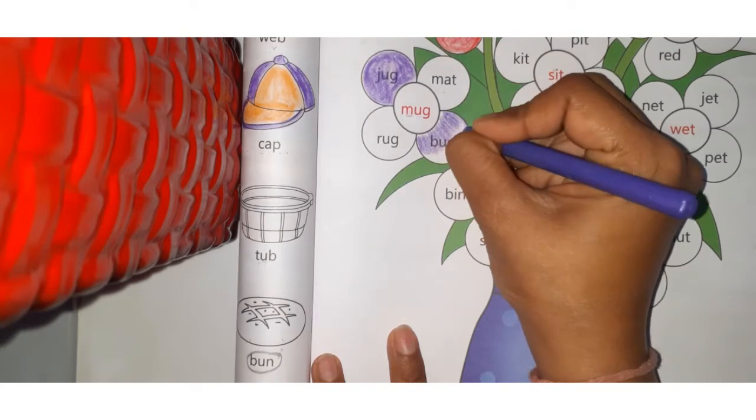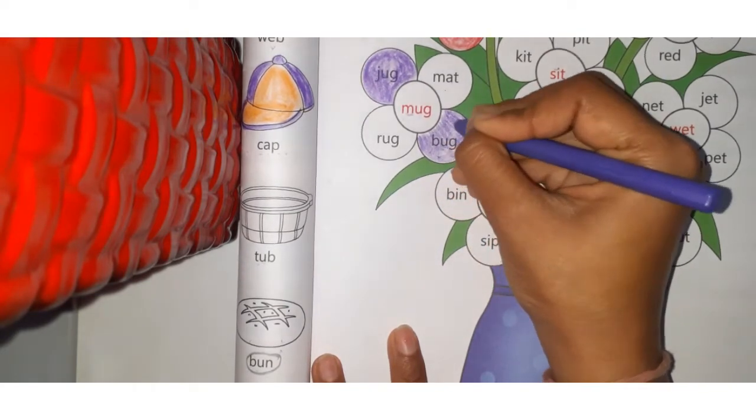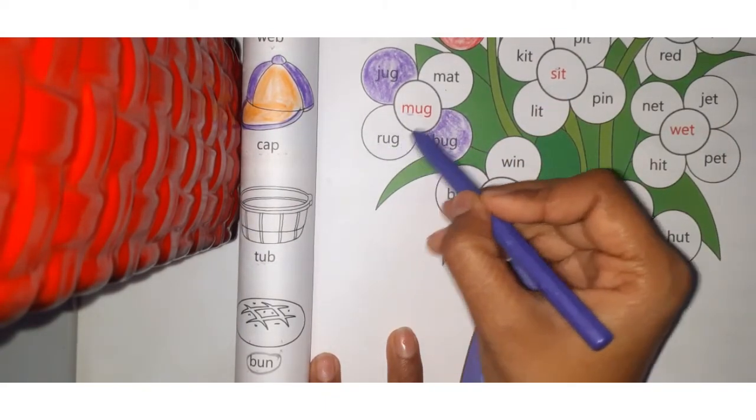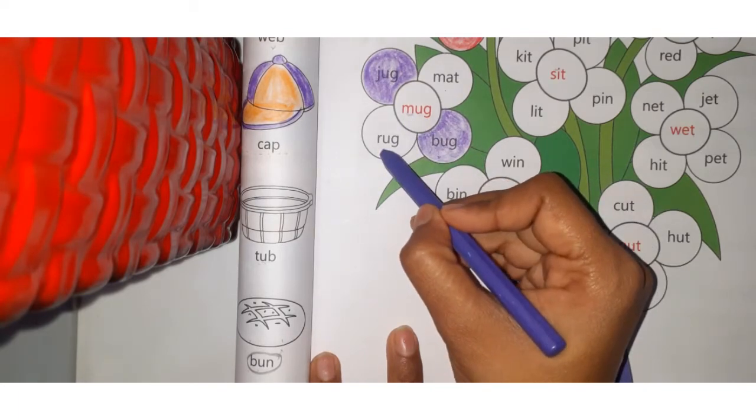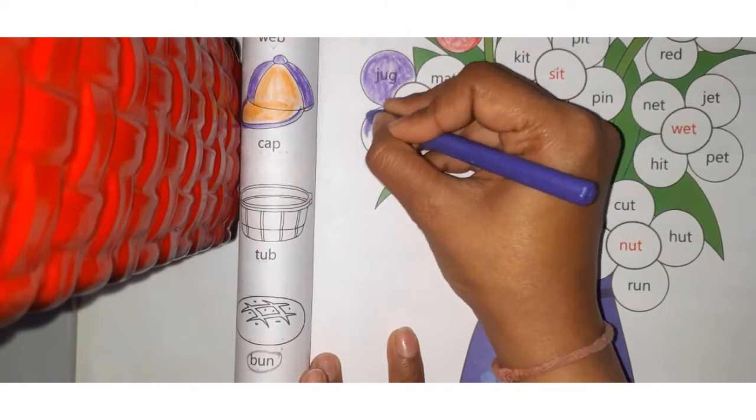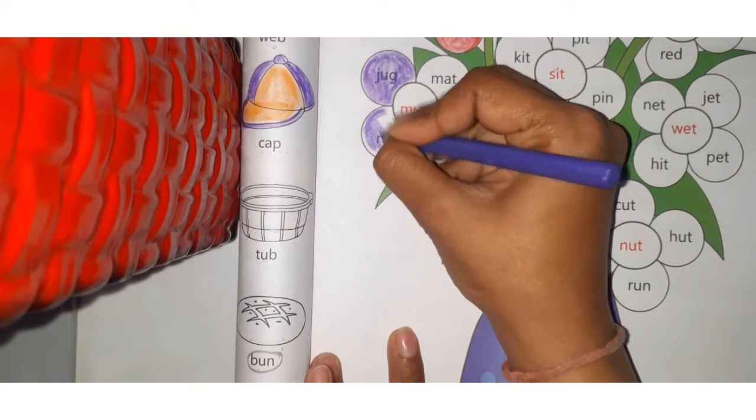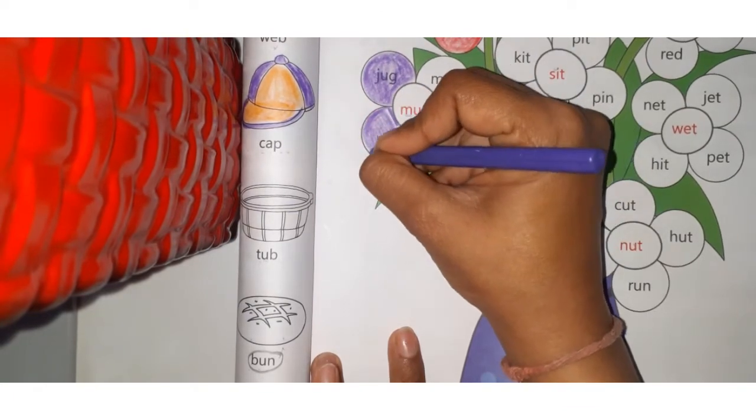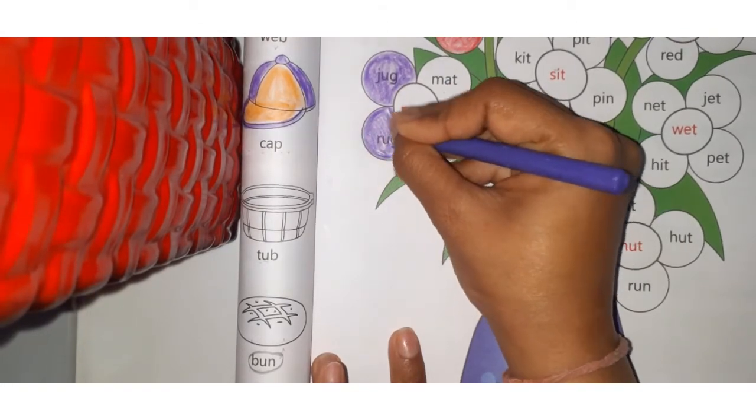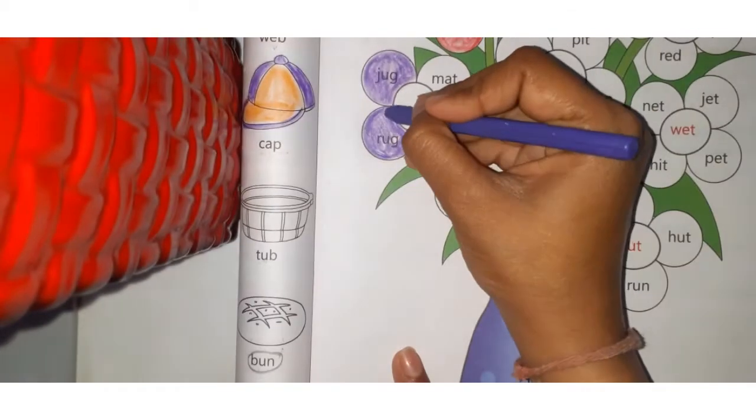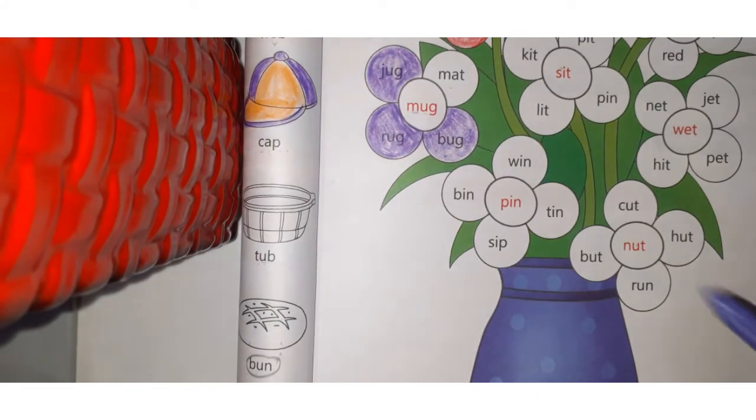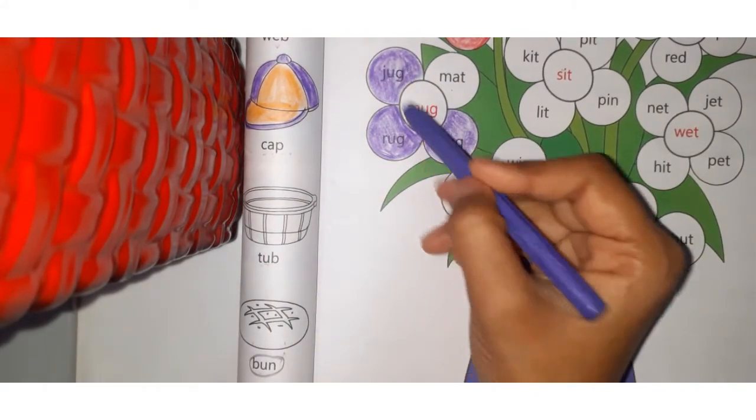Next: RUG, R-U-G, rug. Mug, rug - are they similar? Yes, yes, so we will color this petal too. Mug, rug. So there are three petals which are similar to the center one. Repeat after me: mug, jug, rug, bug.